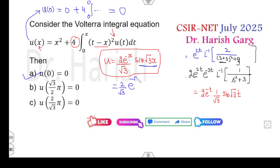e raised to power minus root 3 over 2 pi, it's sine 3 pi over 2. What is the value of sine 3 pi over 2? It is minus 1, so it is not 0. So this option is cancelled.